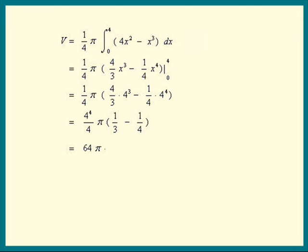64π times common denominator is 12. Numerator is 4 minus 3. We get 64π over 12. 4 is a factor of both the top and bottom. So the answer is 16π over 3 QED.